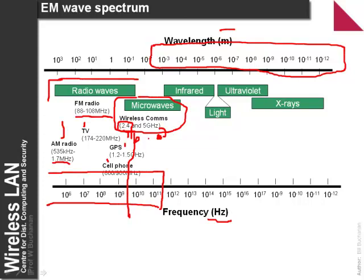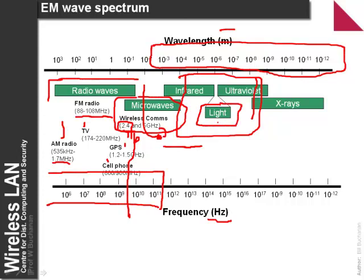The wavelengths we deal with are typically a few centimeters. Above this, we move into millimeter waves, then infrared, light, and ultraviolet. These are the light waves — the only spectrum our eye can see is within a small region, and above that we have X-rays. The key point is that lower-frequency waves are referred to by their frequency, and higher-frequency ones by their wavelength.